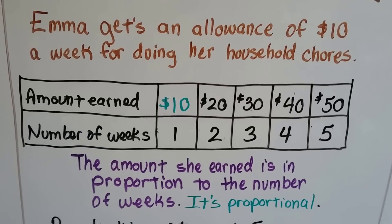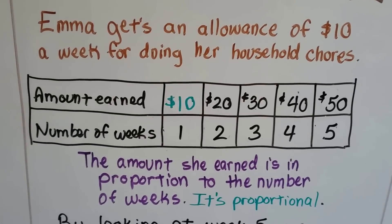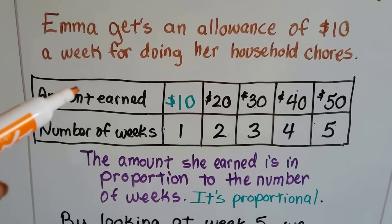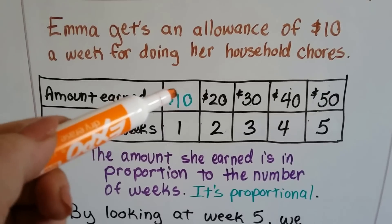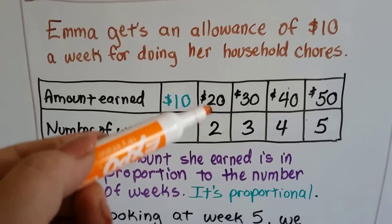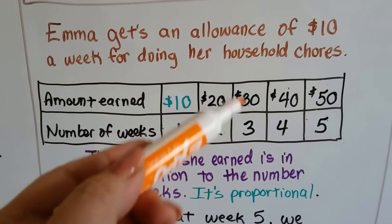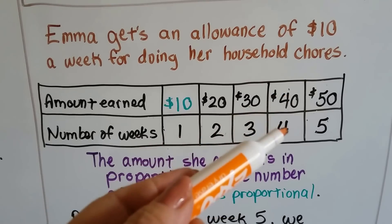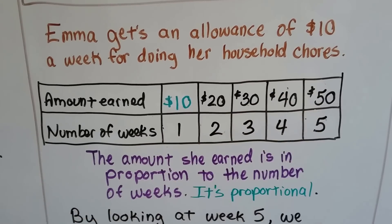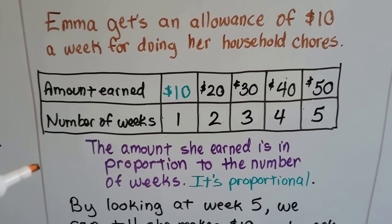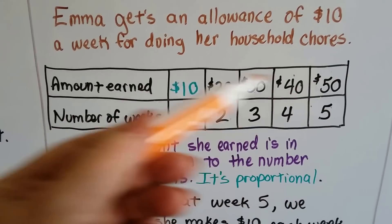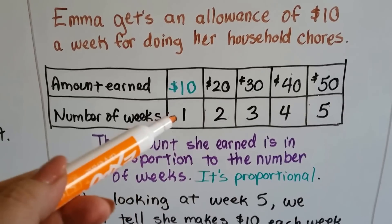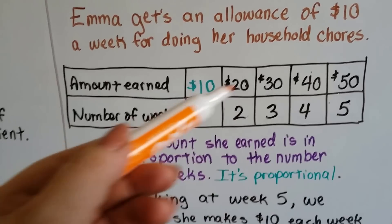Emma gets an allowance of $10 a week for doing her household chores. We can make a chart of the amount earned over the number of weeks: $10 for one week, $20 after two weeks, $30 after three weeks, $40 after four weeks, $50 after five weeks. The amount she earned is in proportion to the number of weeks, and the change is constant - it goes up by $10 each week.